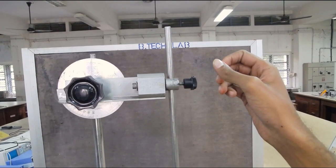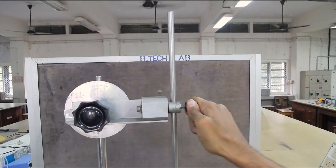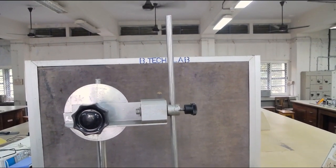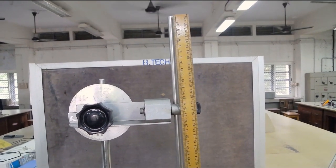Now adjust the rod to another length and find the corresponding time period as we discussed earlier. Repeat this process for several lengths throughout one half of the rod.